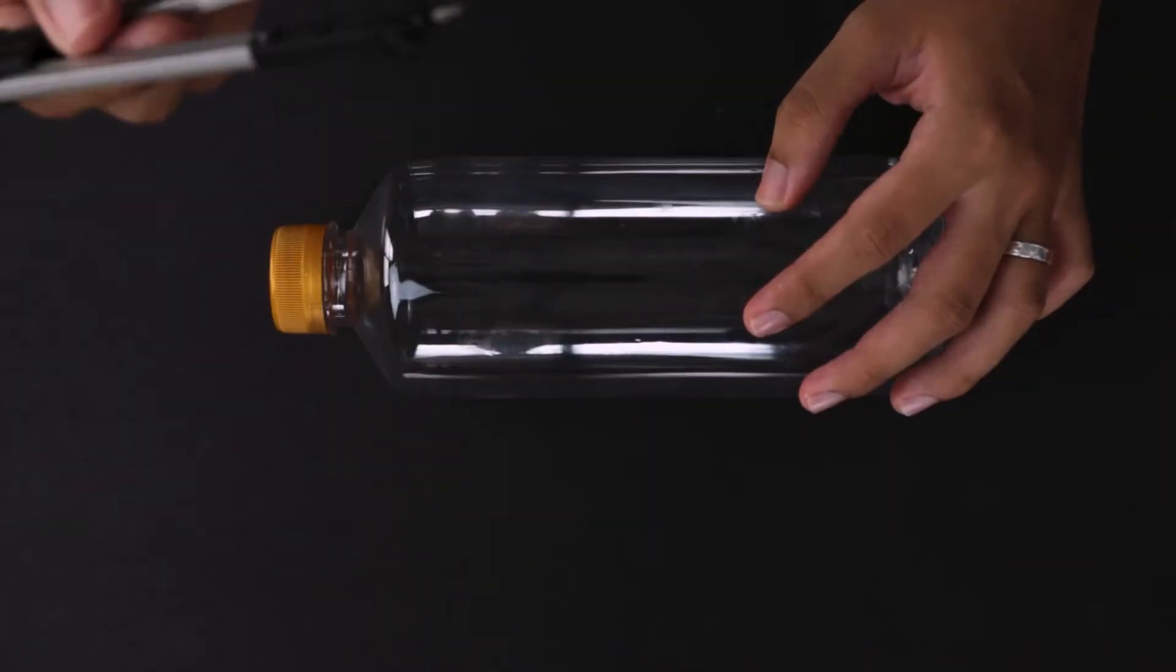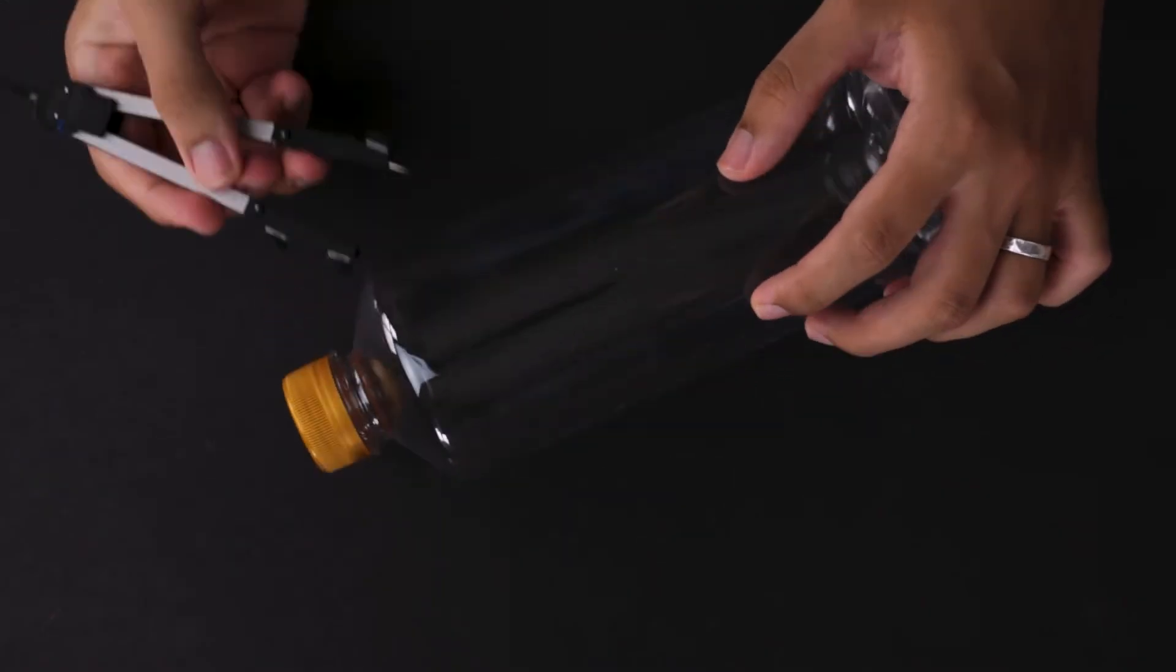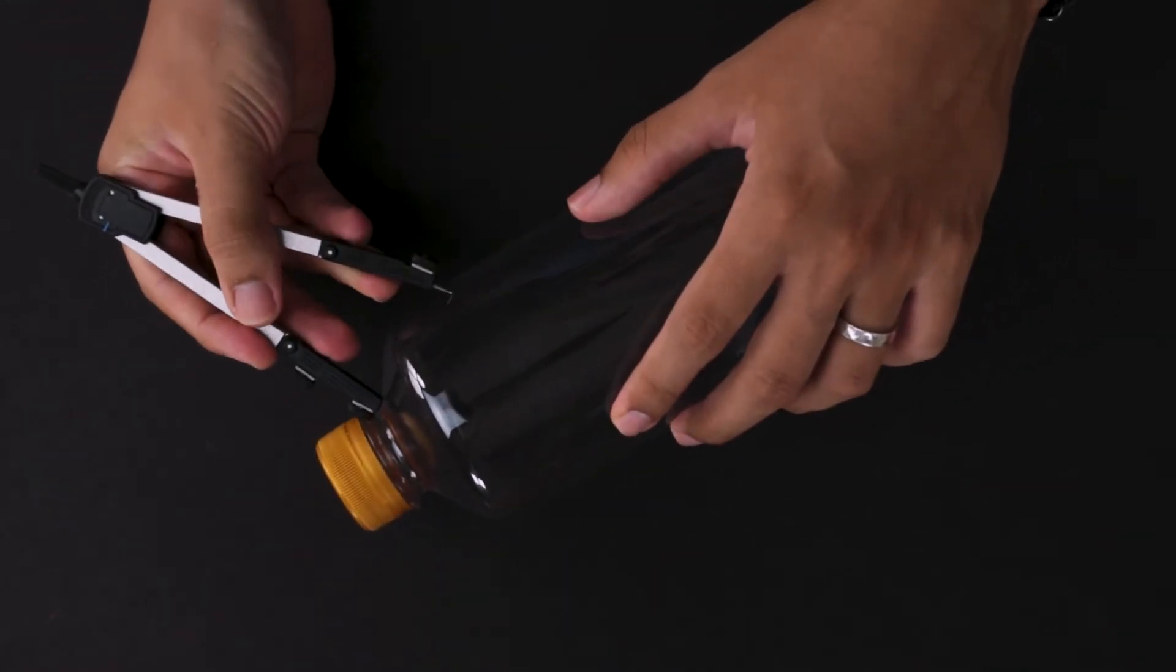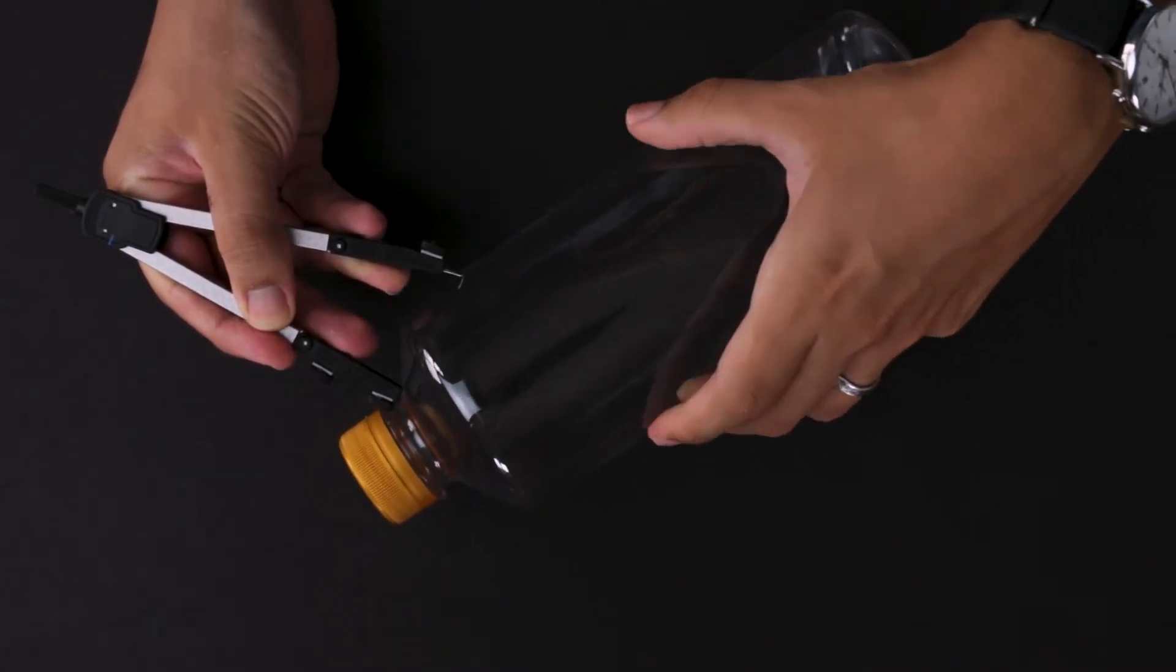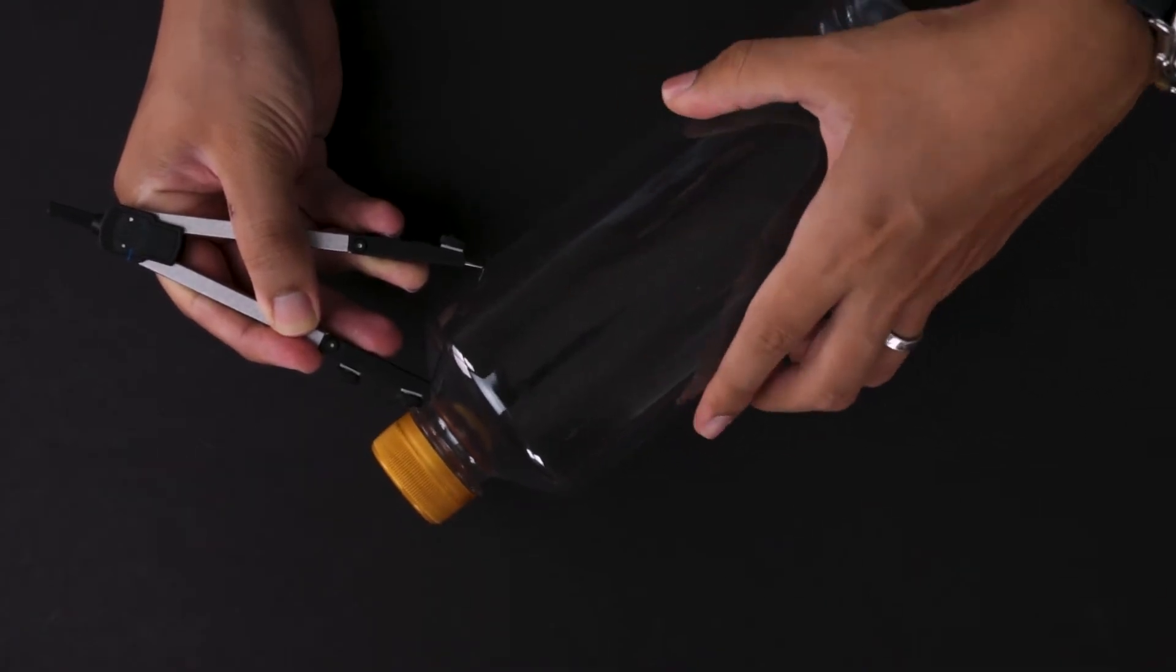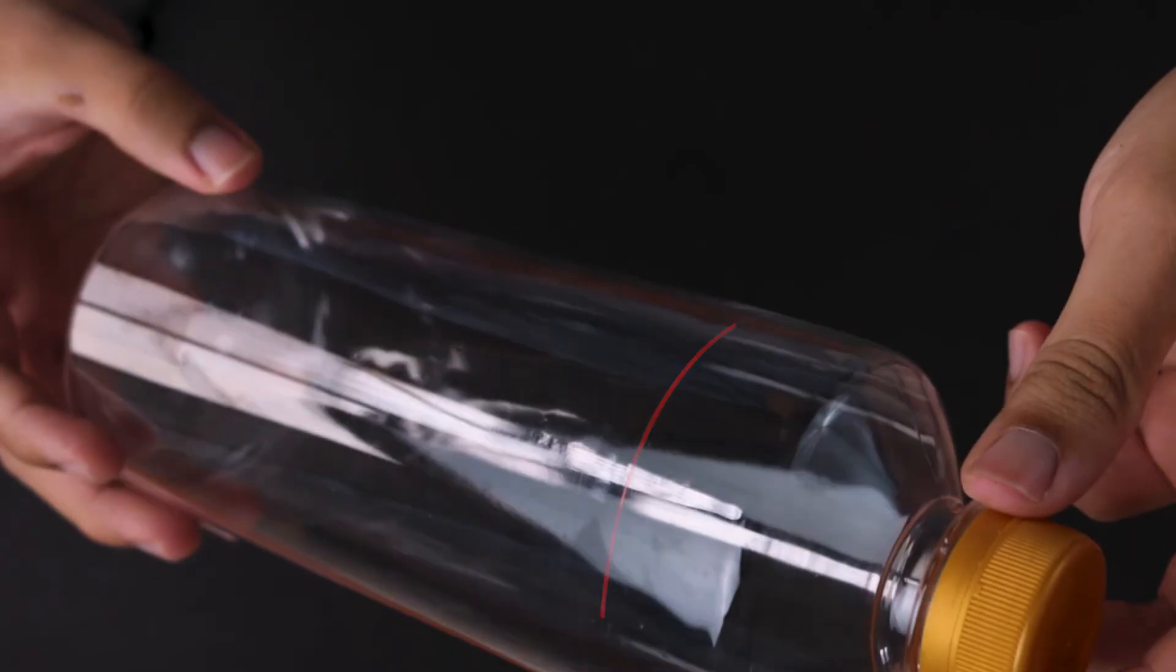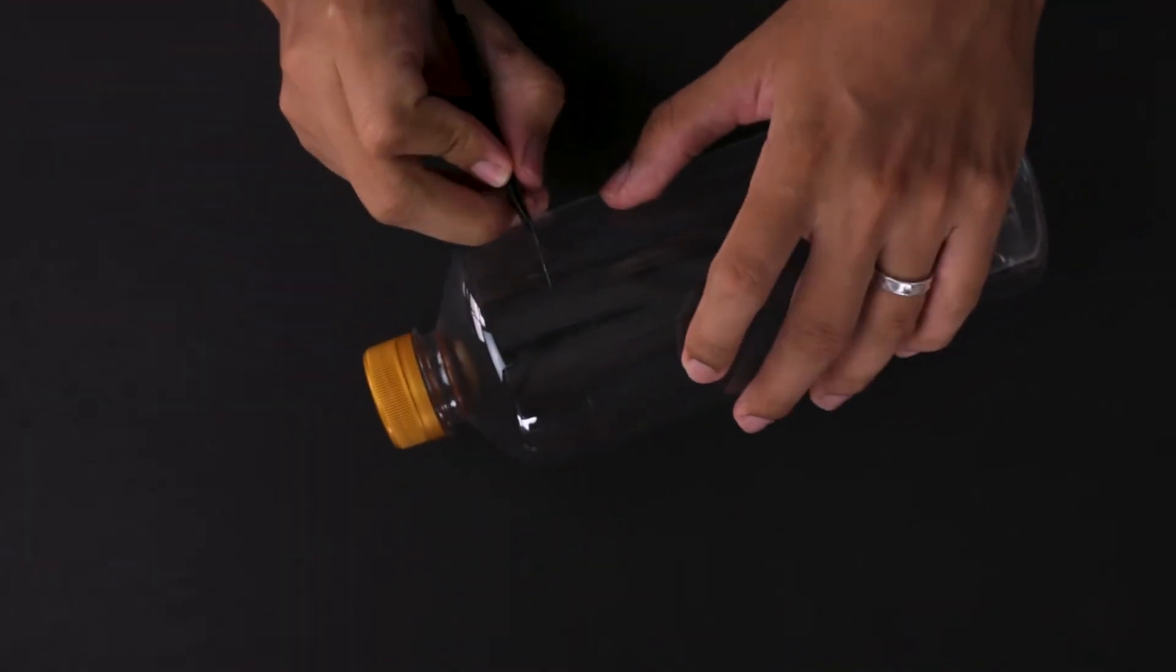First, we'll cut off the top. I want a smooth cut, so I'm going to first use my compass and carefully mark around the top of the bottle. Then, I'll use my art knife and carefully cut off the top.